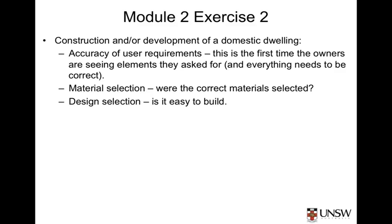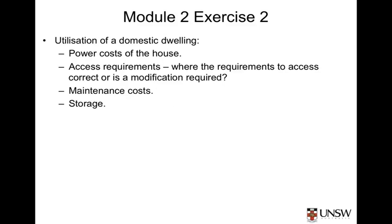Finally, design selection: the appropriateness of the design is also important. If it's too complicated, requiring highly skilled tradesmen or expensive tools, the dwelling may be too difficult to build, resulting in increased cost and longer construction time. Now, the utilisation phase is the time where the requirements for the system are ultimately tested. It's not until the user sees the end product that they can be confident they've received the system they expected.